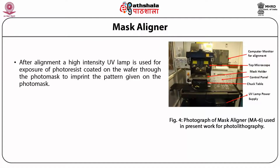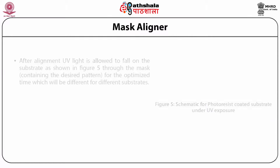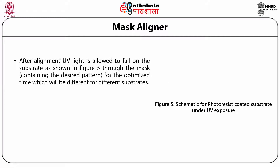After alignment, a high-intensity ultraviolet lamp is used for exposure of the photoresist coated on the wafer through a photo mask to imprint the pattern given on the photo mask. The figure shows the isometric view of the top side alignment and back side alignment system. UV light is allowed to fall on the substrate through a mask containing the desired pattern for an optimized time, which will be different for different substrates.